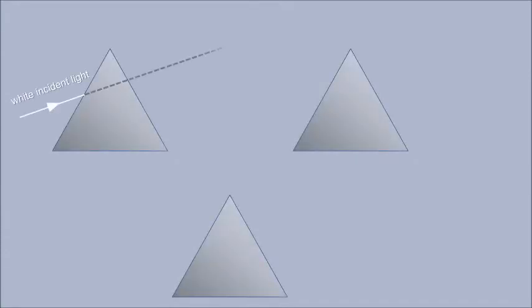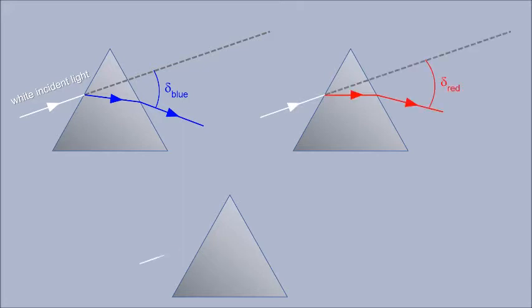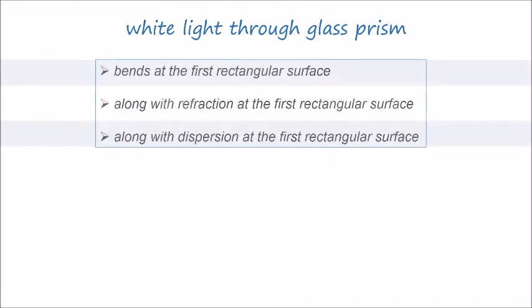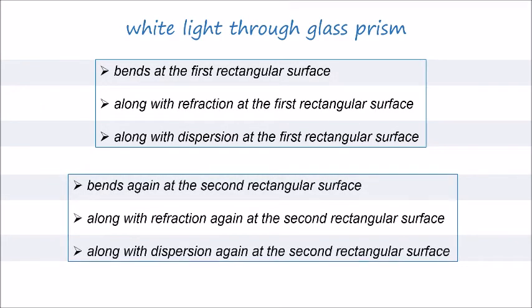White light through a glass prism bends at the first refracting surface, along with refraction and dispersion at the first refracting surface. It then bends again at the second refracting surface, along with refraction and dispersion again at the second refracting surface.